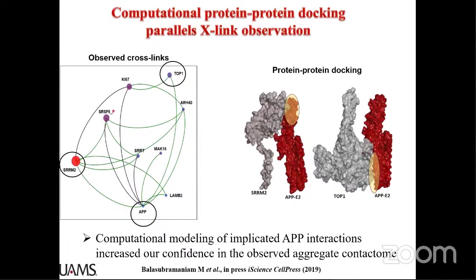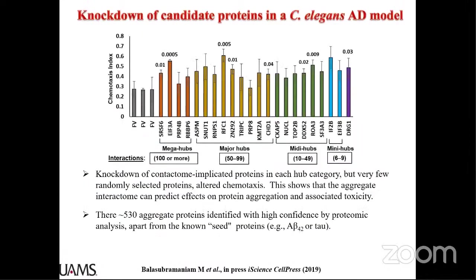We returned to the C. elegans system to assess whether these proteins identified from human brain samples have functional roles in a C. elegans AD model, where amyloid beta-42 is expressed in neurons. We selected a random set of proteins across hub categories — a bunch of mega hubs and major hubs — to broadly assess protective roles.